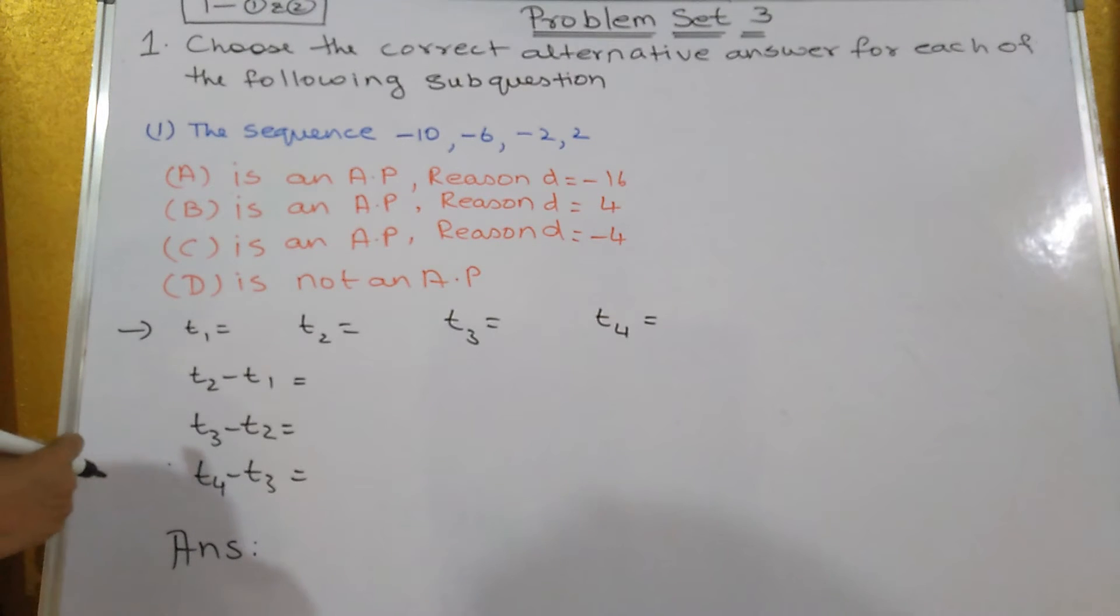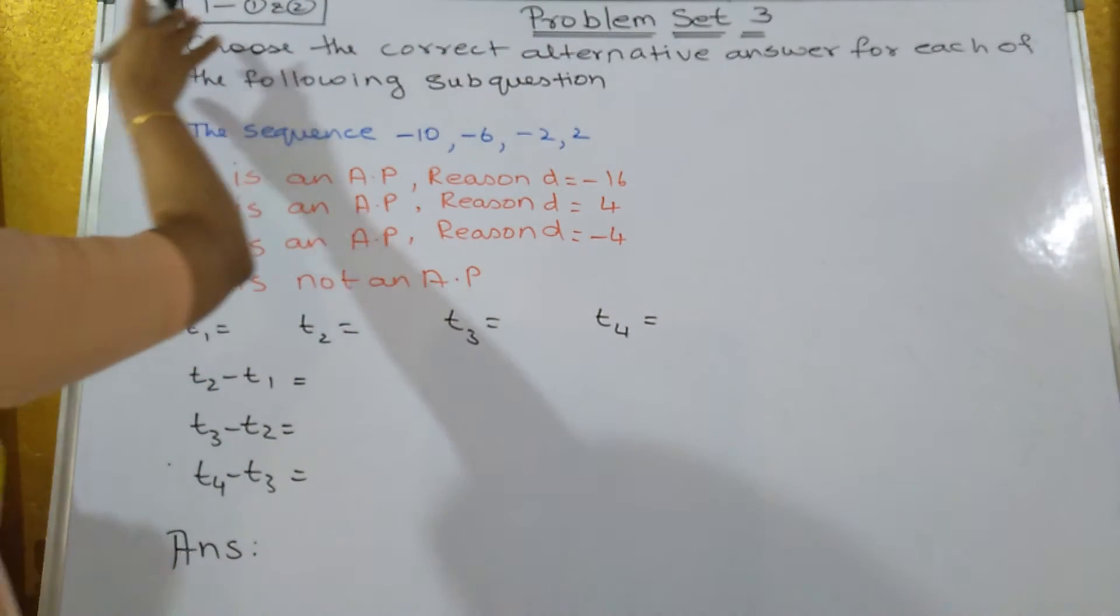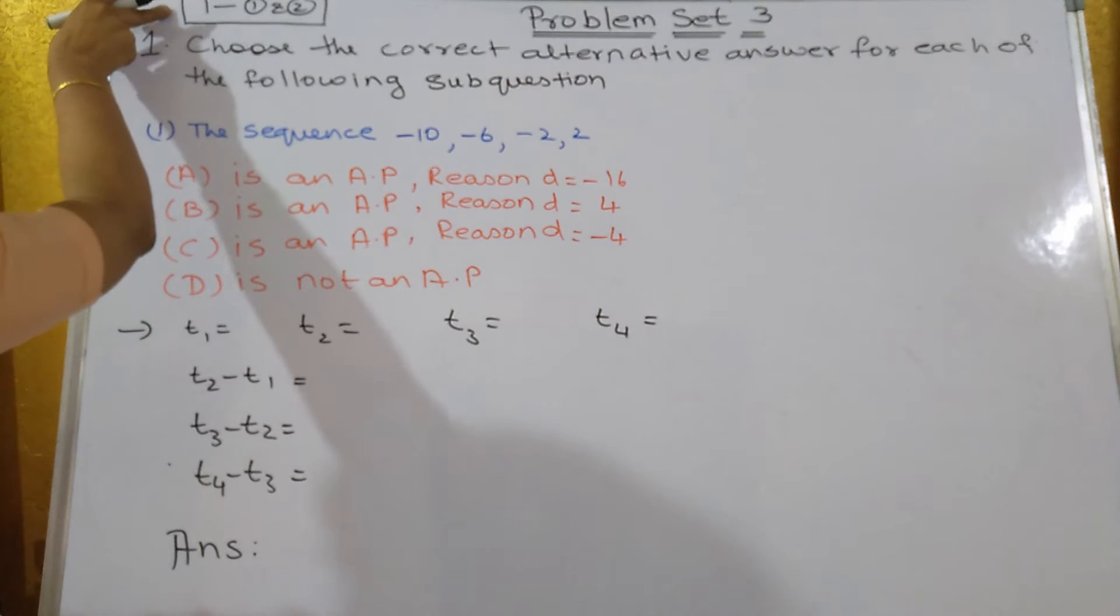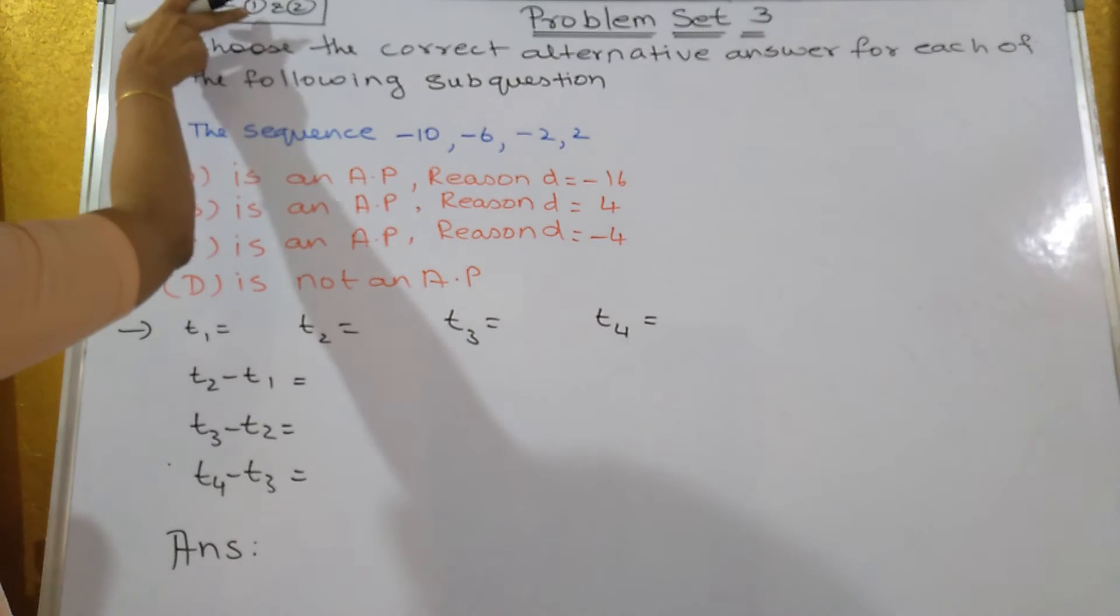Now, choose the correct alternative answer for each of the following sub-question. Problem set 3, practice set 3.1 is the first part. Sum number 1, sum 1 and 2.